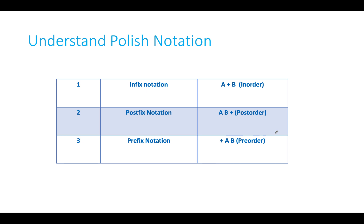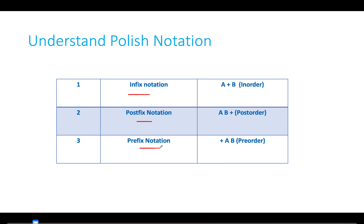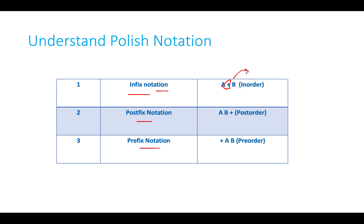Let's understand the polish notation. We have three types of notations: the infix notation, the postfix notation, and the prefix notation, which map to in-order, post-order, and pre-order traversals. In infix notation, you are given two operands with an operator in between — you can evaluate it in the format a plus b.